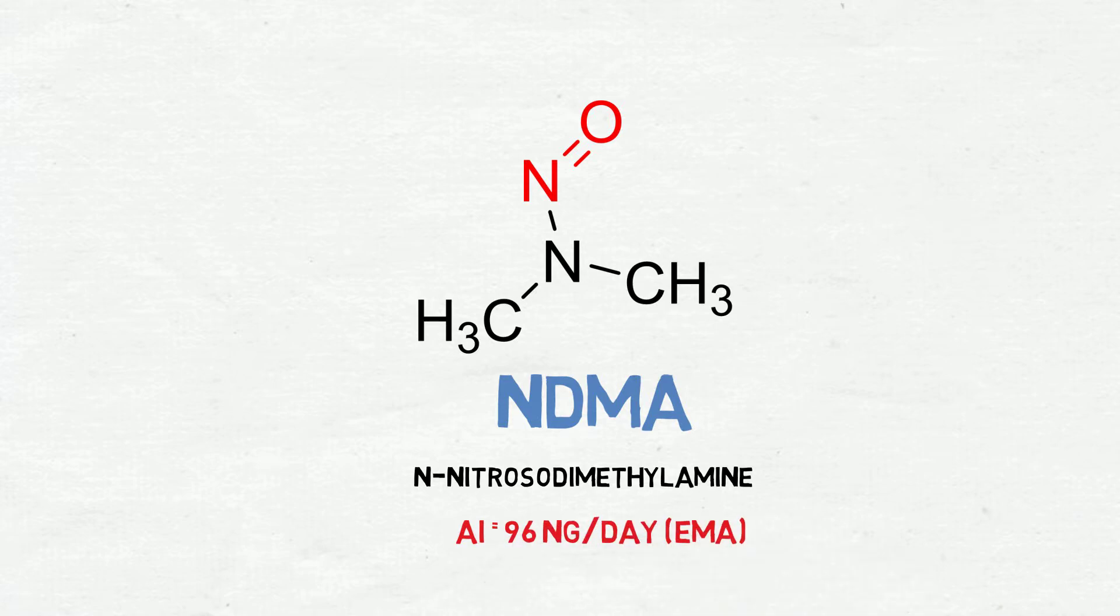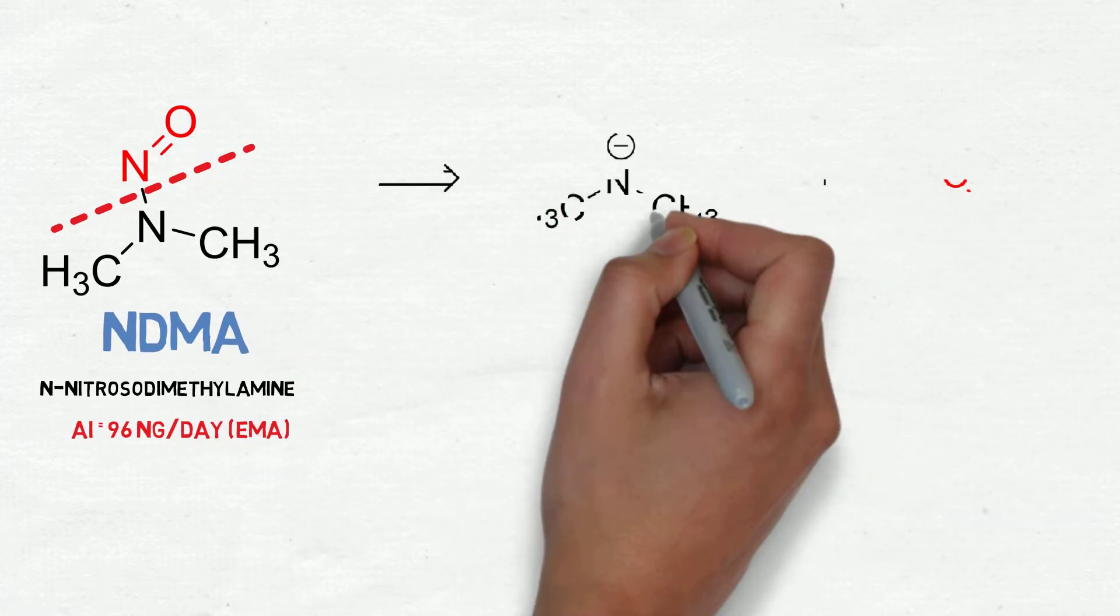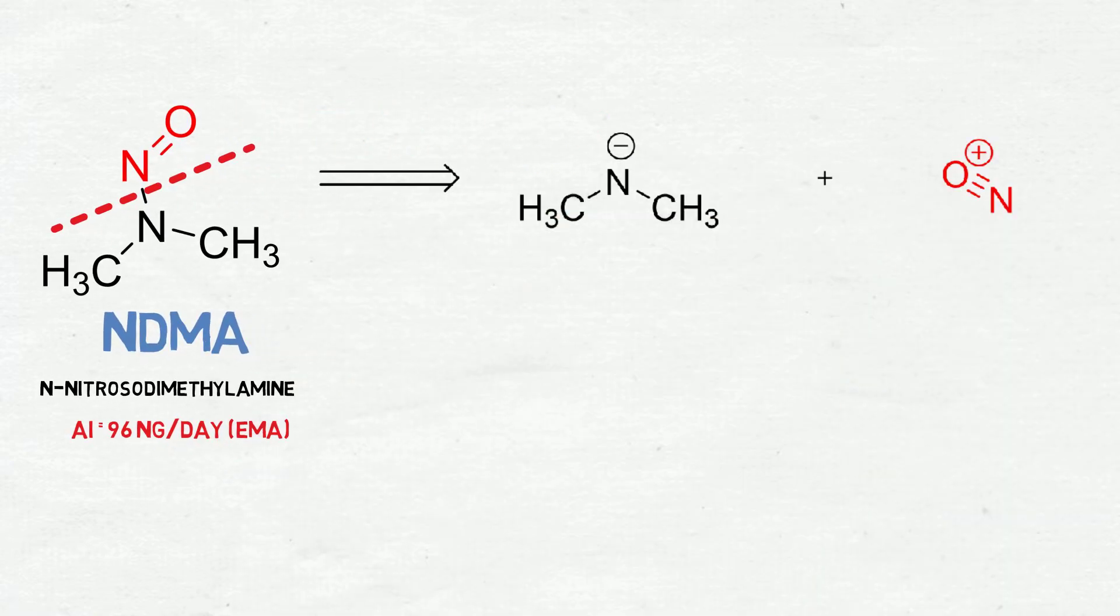But how can retrosynthesis actually help us understand how nitrosamines are formed? Well, basically you have the compound, and in retrosynthesis you just break the main bond. In this case, you break the N-nitroso bond. Then you will generate two fragments: one is an anion of secondary amine and the other is a nitrosonium. Now we know which structures or intermediates could form NDMA.